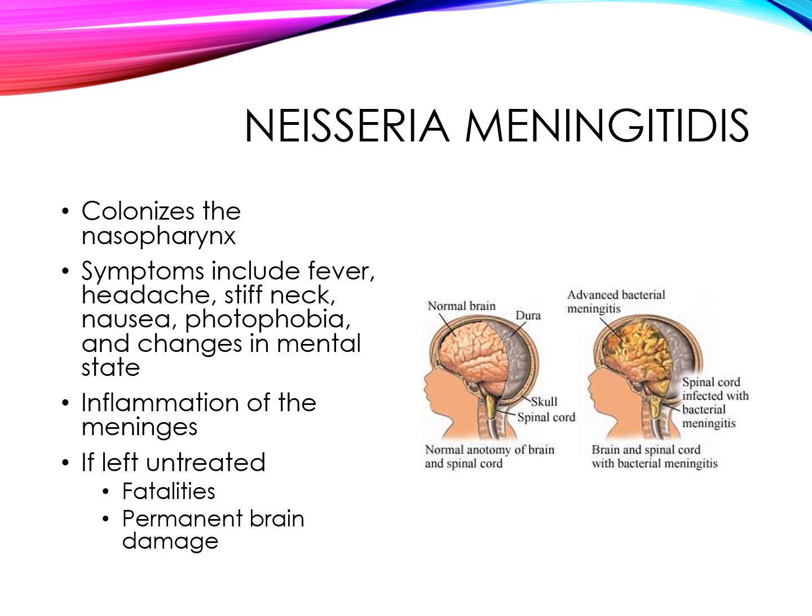Neisseria meningitidis is an encapsulated gram-negative diplococcus bacteria, nearly identical to Neisseria gonorrhoeae. The key difference is that Neisseria meningitidis has a polysaccharide capsule with anti-phagocytic properties. It is only found in humans and predominantly colonizes in the nasopharynx. Risk factors associated with Neisseria meningitidis include age, community settings, individuals with certain diseases or medications that weaken their immune system, and foreign travel.